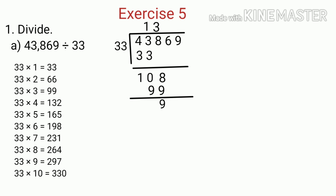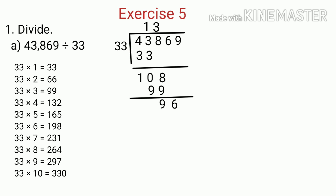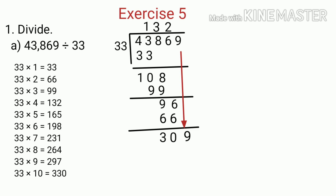Now again we bring down the next digit, that is 6. And then we compare 96 and 33. Since 96 is greater than 33, we look for a product of 33 which is equal to, or less than, and nearest to 96. The nearest product is 66. So we write 2 in the equation, because 33 multiplied by 2 is 66. And then we subtract 66 from 96, which is equal to 30. Now we bring down the next digit, that is 9.